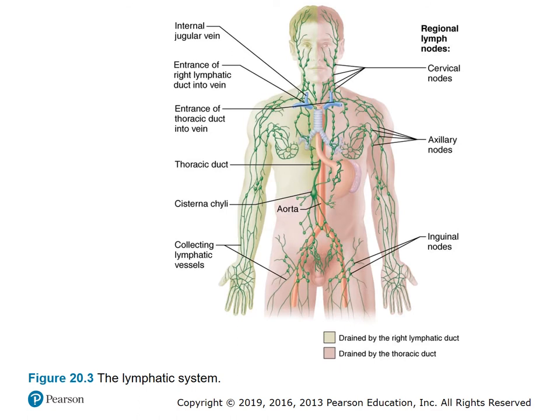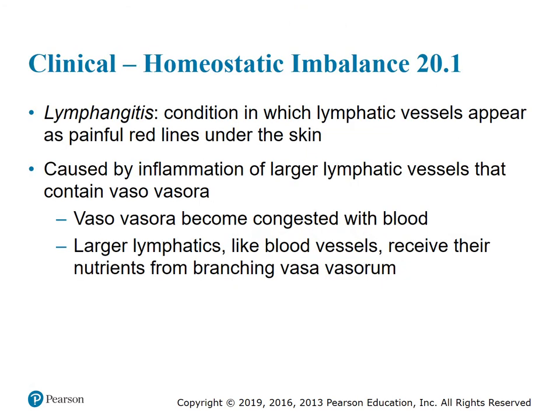Figure 20.3, the lymphatic system, shows the system of vessels, lymphatic vessels, and ducts — specifically those drained by the right lymphatic duct and those drained by the thoracic duct. Clinical homeostatic imbalance 20.1: Lymphangitis is a condition in which the lymphatic vessels appear as painful red lines under the skin. It's caused by inflammation of larger lymphatic vessels that contain vasa vasorum. The vasa vasorum become congested with blood, as larger lymphatics, like blood vessels, receive their nutrients from branching vasa vasorum.